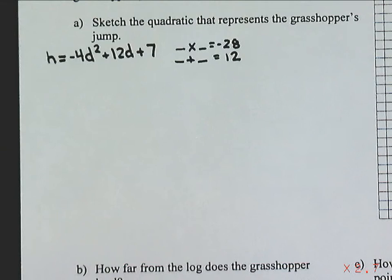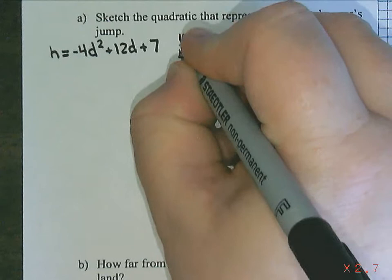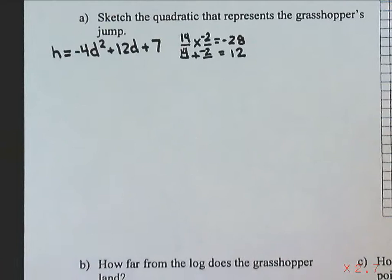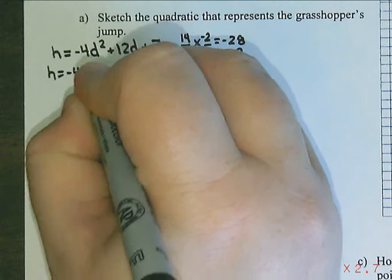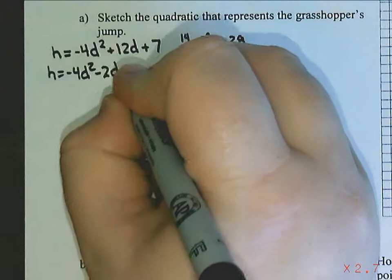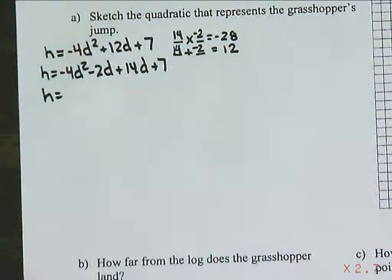So things that multiply to 28 would be 1 and 28, that's not going to work. 2 and 14, that might be good. And 7 and 4, which is not going to work. So we're going to choose positive 14 and negative 2. And that's going to give me a product of negative 28, and that's also going to add to 12. So we're going to expand this to say negative 4d squared plus, I'm actually going to put the 2 with that one, so minus 2d plus 14d plus 7.